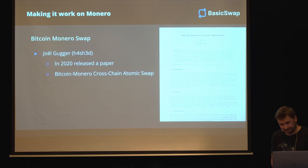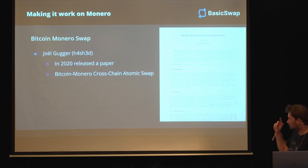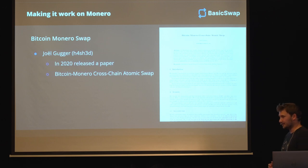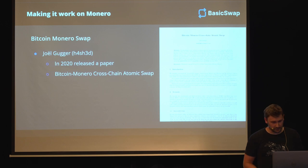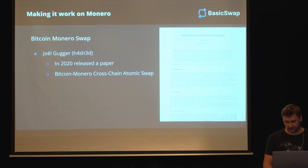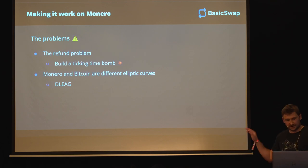And then we'll get to the Bitcoin-Monero swap. We now have a lot of the building blocks that are required. And Joel Guger, also commonly known as h4sh3d, basically in 2020 released a paper that put everything together and showed the world that Bitcoin-Monero swaps are possible for the very first time. He addresses some problems that I think are worth going over.